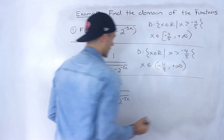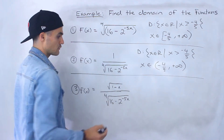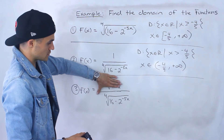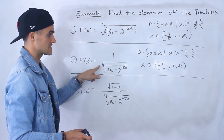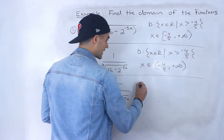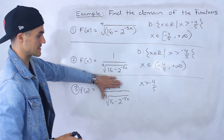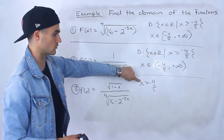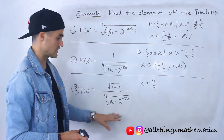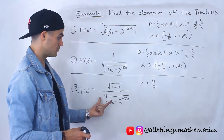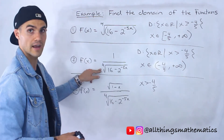Finally, number 3. We have the square root of 1 minus x in the numerator over the fourth root of 16 minus 2 to the negative 5x in the denominator. Let's forget the numerator for now — notice the denominator is the exact same expression as in function 2. So we definitely know that x has to be greater than negative 4 over 5. That has to hold no matter what's in the numerator, otherwise this function is undefined — either because the denominator is zero or because the expression under the fourth root is negative.